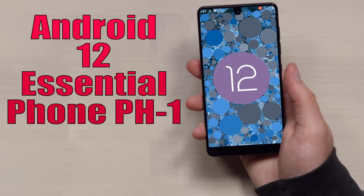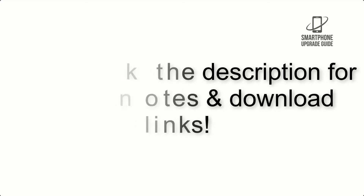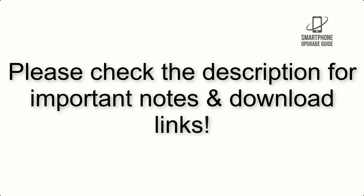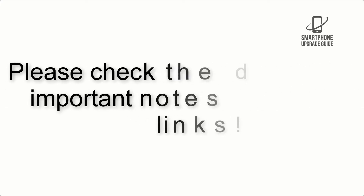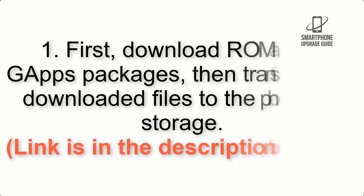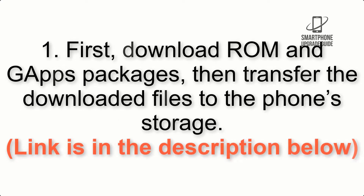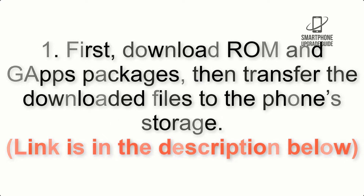Install Android 12 on Essential Phone PH1 via LineageOS 19.1. Please check the description for important notes and all the download links. First, download the ROM and GApps packages, then transfer the downloaded files to the phone storage. The link is in the description below.